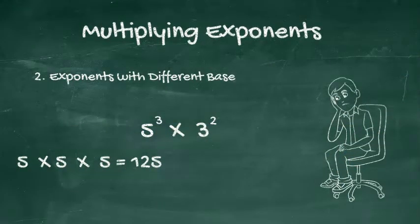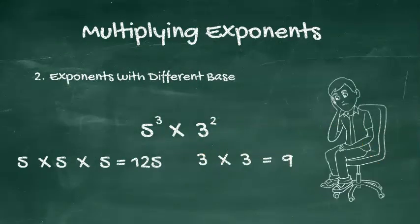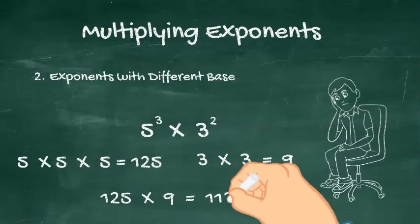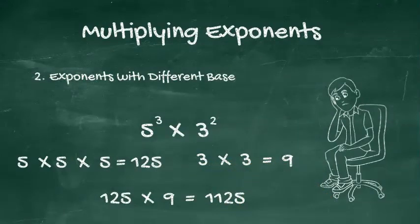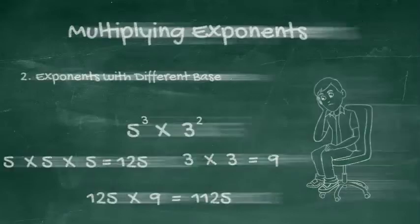5 times 5 times 5 equals 125, and 3 times 3 equals 9. 125 times 9 equals 1125.